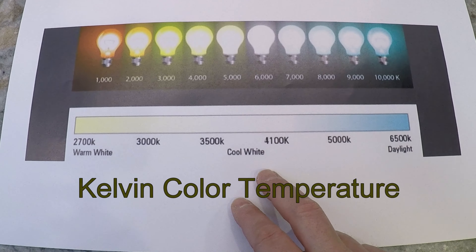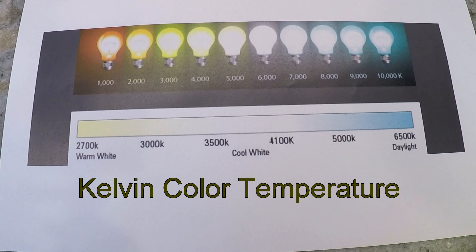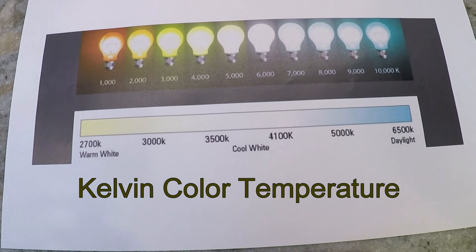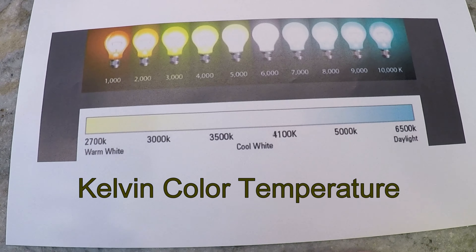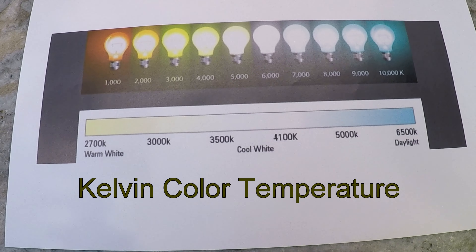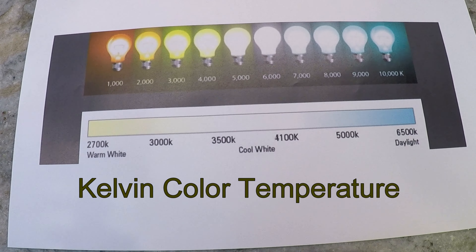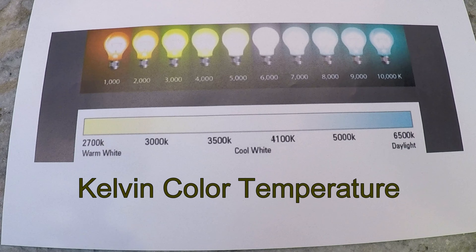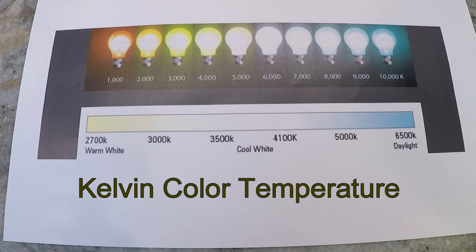What I have here is a printed-out chart that I made of the Kelvin color temperature scale. I'm not going to get into the technical definition of the Kelvin measurement and where it derives from — I'm just going to explain how it relates to you and your home lighting.